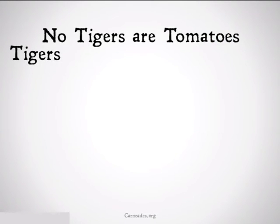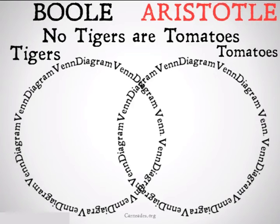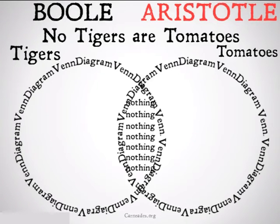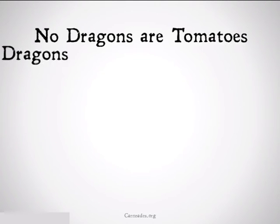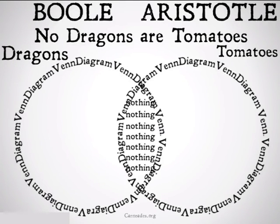No tigers are tomatoes. Because Boole and Aristotle will both shade the middle, but because tigers exist, Aristotle is going to put an X with a circle around it on the tiger's side. However, if it's no dragons are tomatoes, they will both set it up the same, only shading the middle because dragons don't exist, so there's no X to put on the subject side.